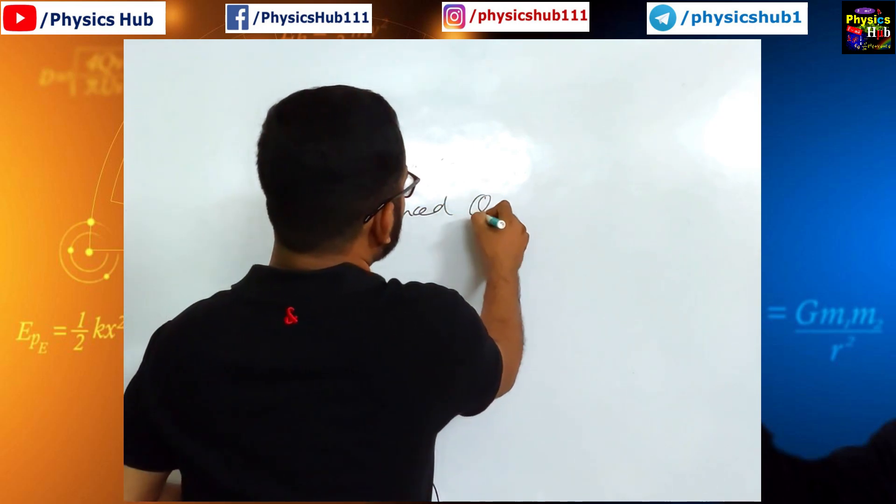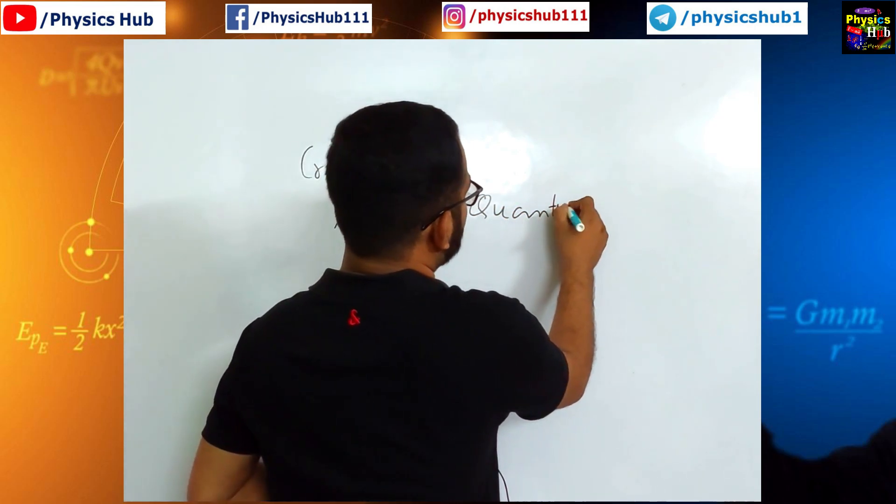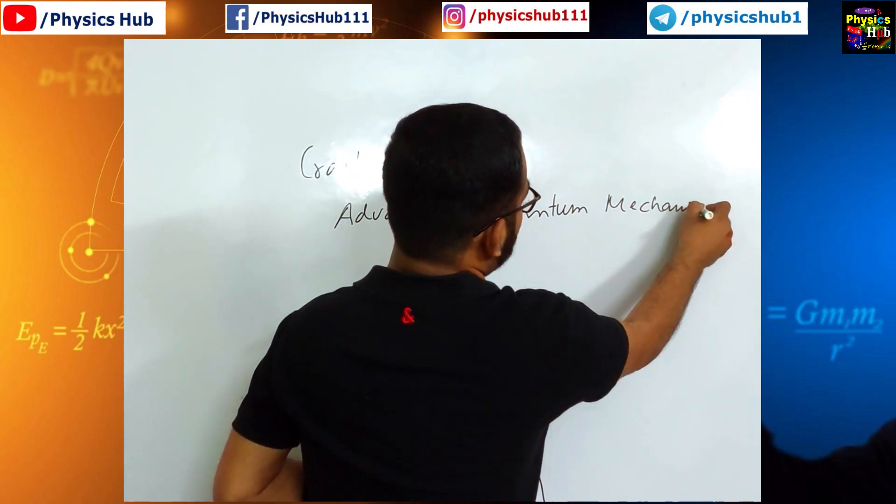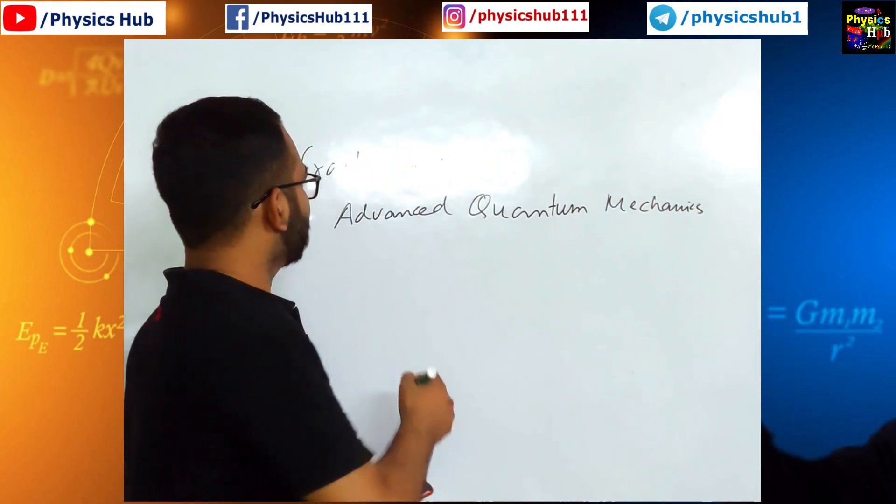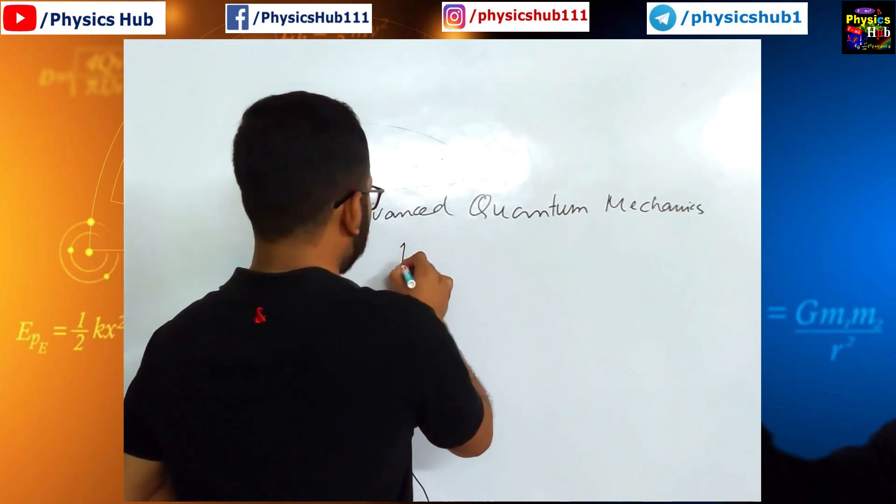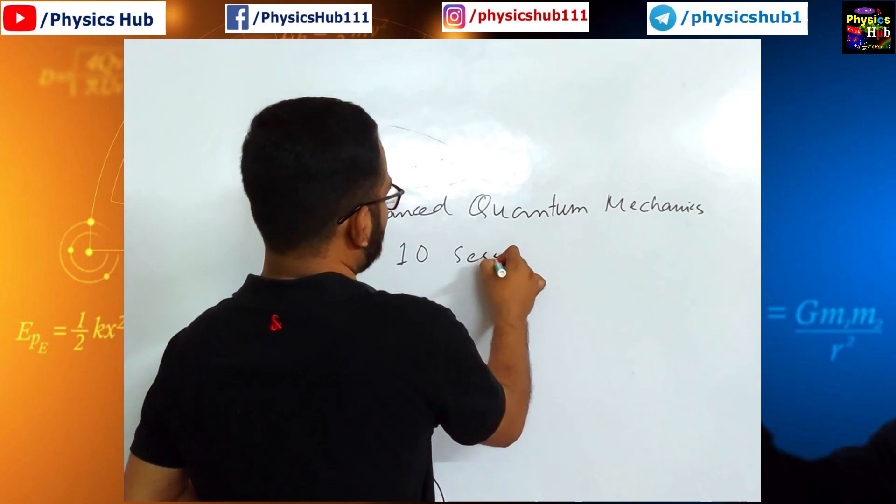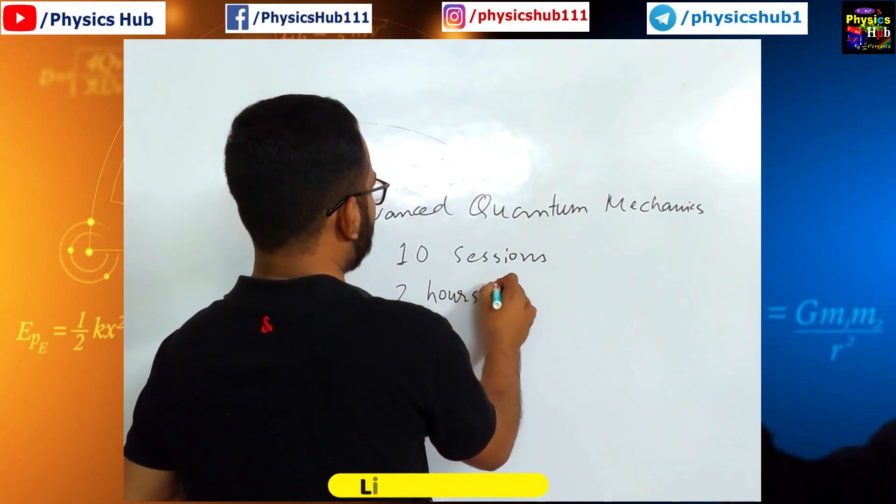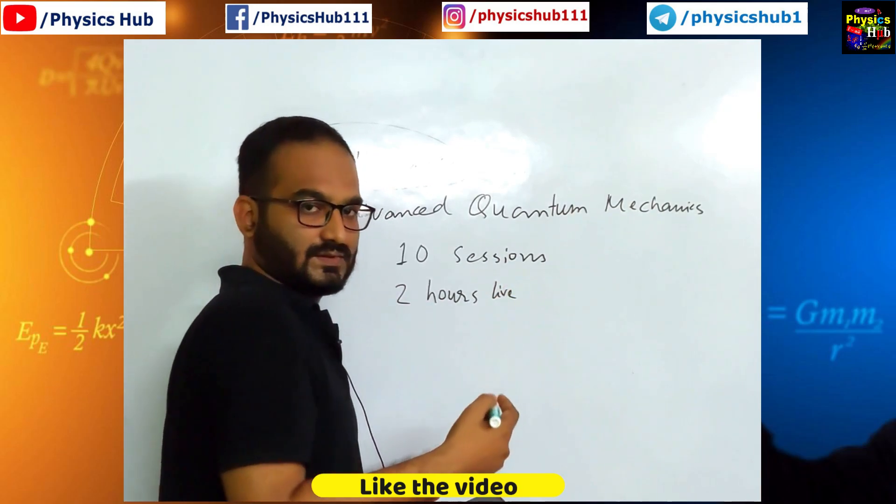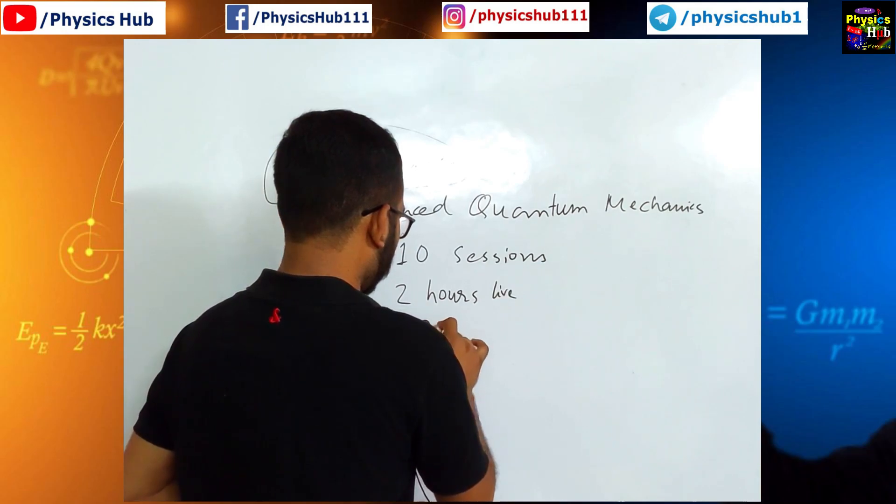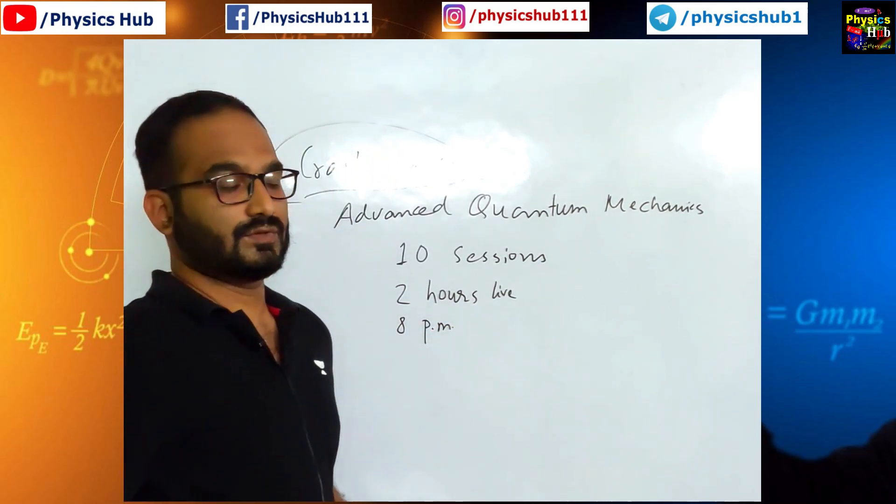In this course, some of the advanced topics of Quantum Mechanics, mostly from Part C, will be discussed. This crash course consists of 10 sessions, each of two hours long, live classes. And these classes will be taken in the evening, 8pm onwards. Now, let me tell you more about this course.